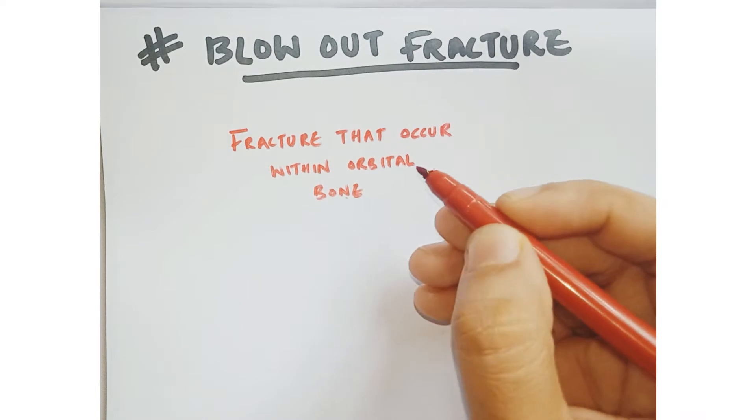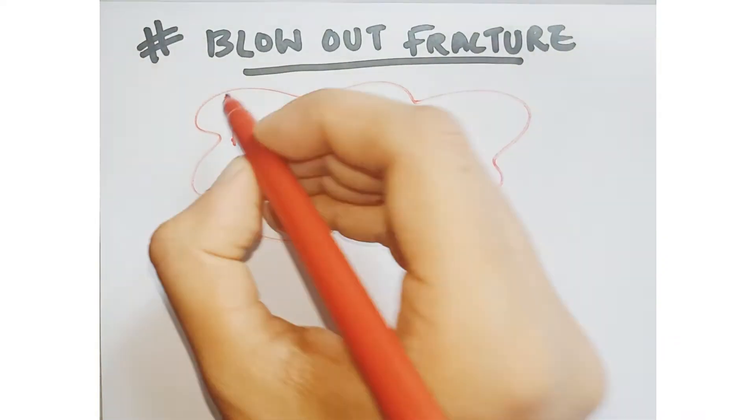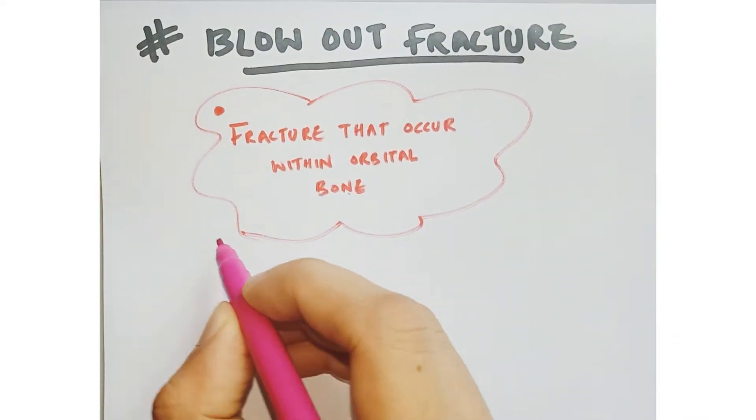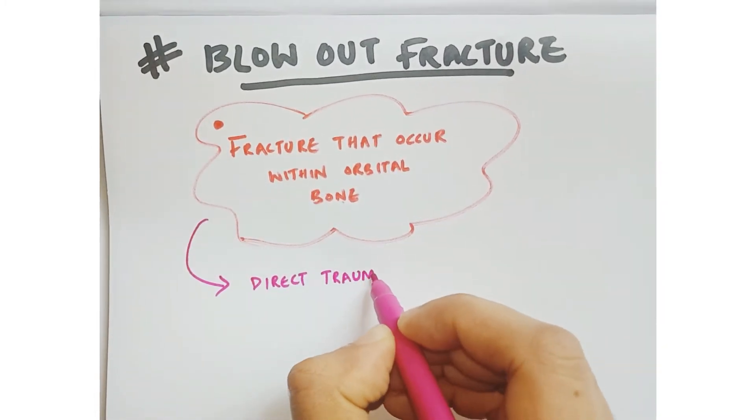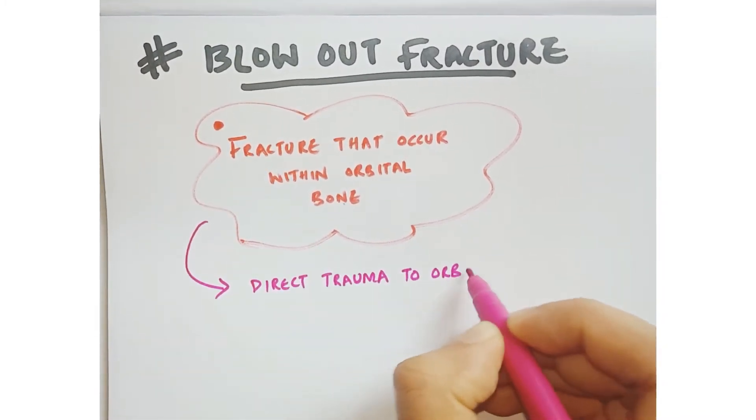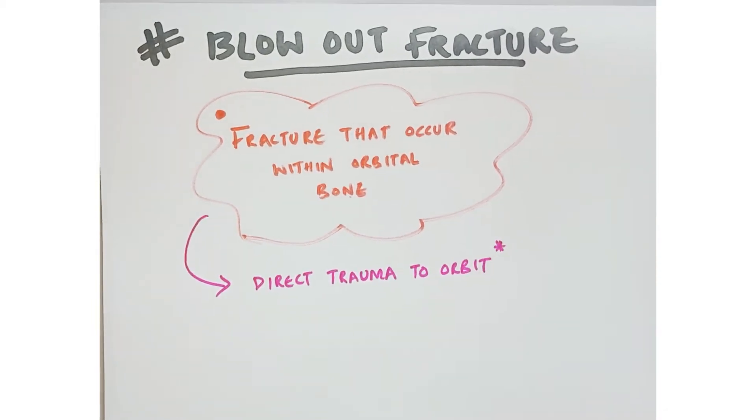Blowout fracture is simply the fracture that occurs within the orbital bone. It results from direct trauma to the orbit. These fractures may affect the floor, middle wall, lateral wall, and also the roof of the orbit.